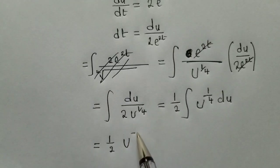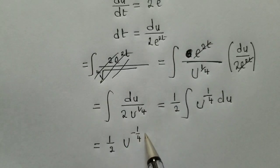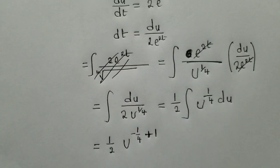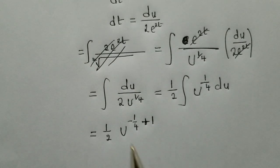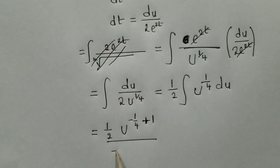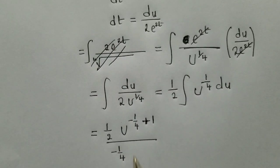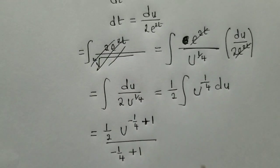And here, we shall have u power negative 1 over 4 plus 1. So this all new power, negative 1 over 4 will be divided. So this is how it will look like.